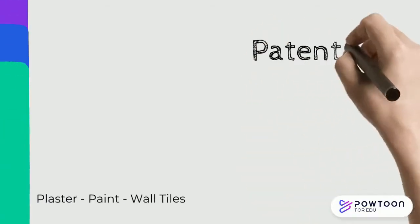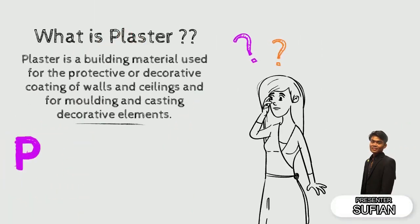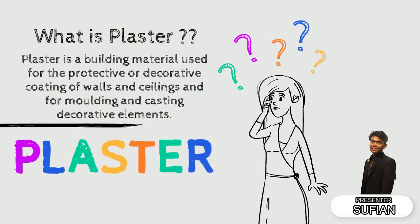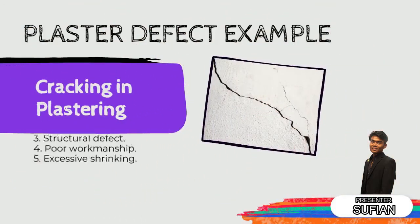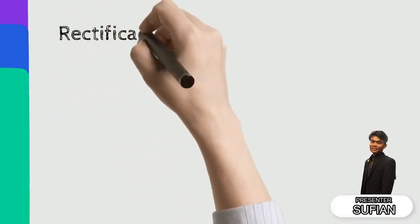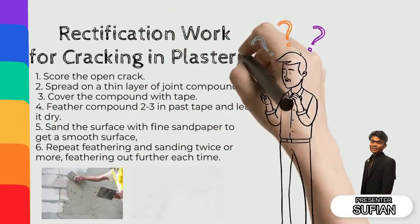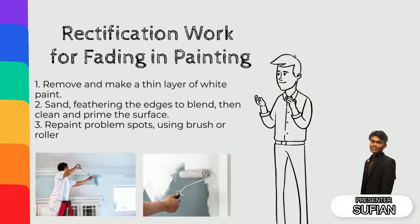Next is pattern and latent defects for internal wall: plaster, paint, and wall tiles. Plaster is a building material used for protection and decoration. Cracking in plastering is an example of a plaster defect. The causes of cracking in plaster are thermal movement, surface discontinuity, structural defects, poor workmanship, and excessive shrinkage. Rectification work for cracking in plastering: score the open crack, spread a thin layer of joint compound, cover the compound with tape, and feather the compound 2 or 3 passes past the tape and let it dry. Sand the surface with fine sandpaper to get a smooth surface, then repeat feathering and sanding twice.